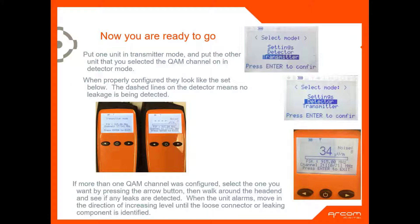All we have to do is tell the devices whether it's a transmitter or a detector. One of the units will be set up as the transmitter and the other as the detector. If more than one comm channel was configured, select the one you want by pressing the arrow button until you get to the required channel, then walk around the head end. On your detector, as you're walking around the head end, if you change channels on the detector, the transmitter automatically changes. You don't have to go back to the transmitter every time. For example, if you went from channel 17 to channel 61 on the detector, the transmitter also changes.